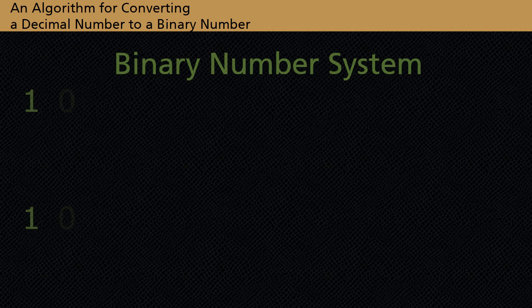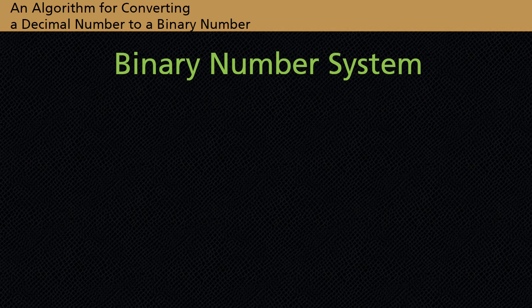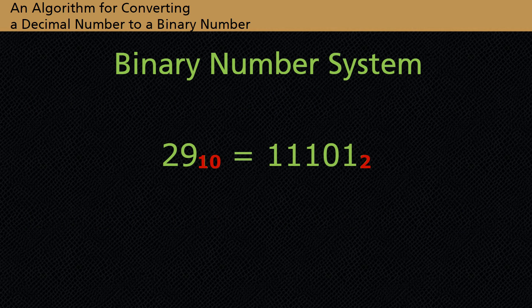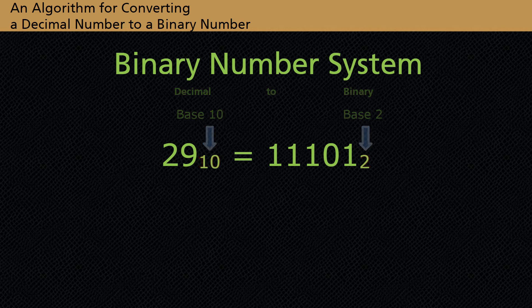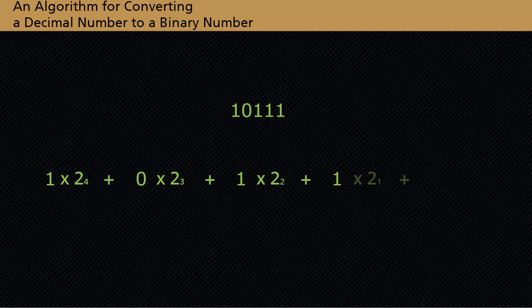The binary number system is a base 2 number system. It uses two digits, 0 and 1. Subscripts are used to help us identify what type of number is given. Note how the binary number 10111 can be written in expanded form. Since each digit is multiplied by a power of 2, we call the binary number system a base 2 number system.